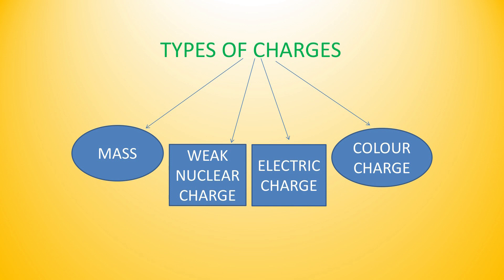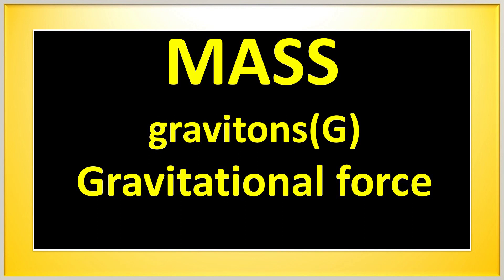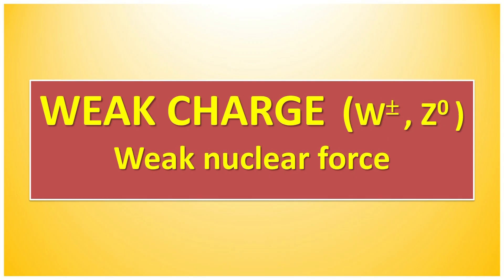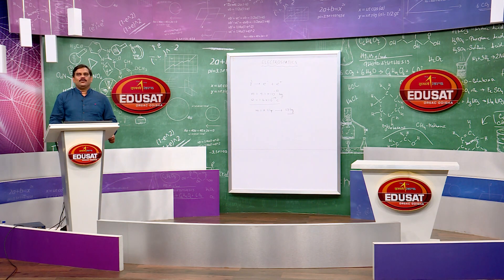Due to mass of a body we get gravitational force or interaction between two masses. They are mediated by gravitons, which are massless field particles. Therefore, gravitational force has range equal to infinity. It is the weakest among all the interactions present. The second one is weak charge, which gives weak nuclear force. It comes from the isotopic spin of nuclear elements. It exists inside the nucleus because it is mediated by the particles W+, W- and Z⁰ bosons which are very heavy, so these forces are short-range forces existing inside a nucleus.